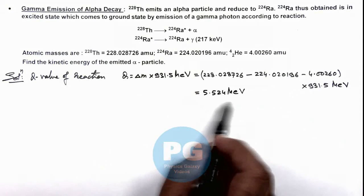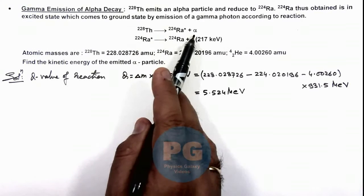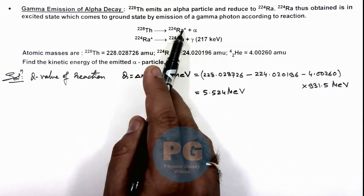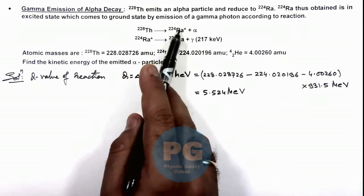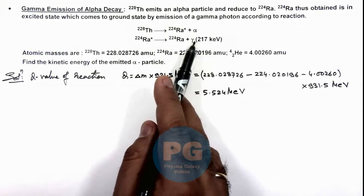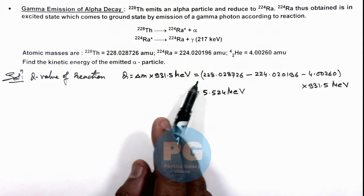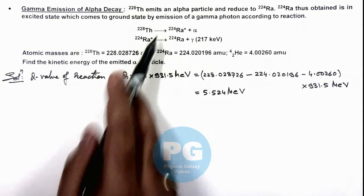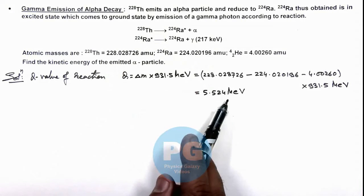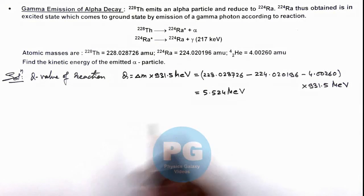Here we can see when this is the total energy released, the first part of reaction when alpha is emitted, the radium is in excited state, that means radium absorbs 217 kilo electron volts of energy or 0.217 million electron volts. So if we calculate the amount of energy in the first step, that will be 5.524 minus 0.217 million electron volts.